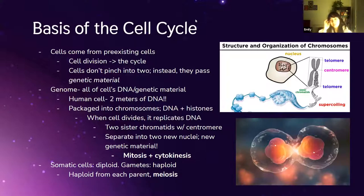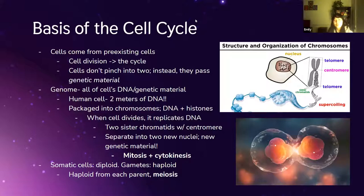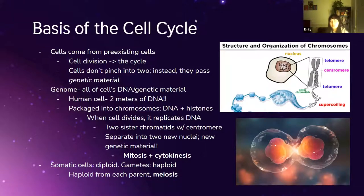Some definitions: the genome is all of a cell's combined genetic material. Genetic material is found in DNA, which codes for instructions for the cell. One human cell can actually have two meters of DNA in length, which shows how much genetic information goes into each of our cells.